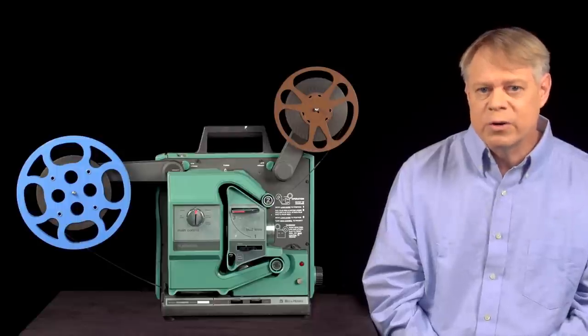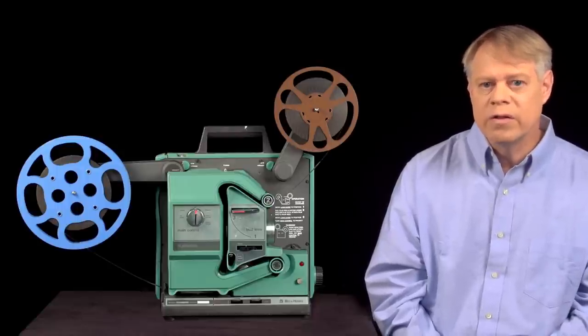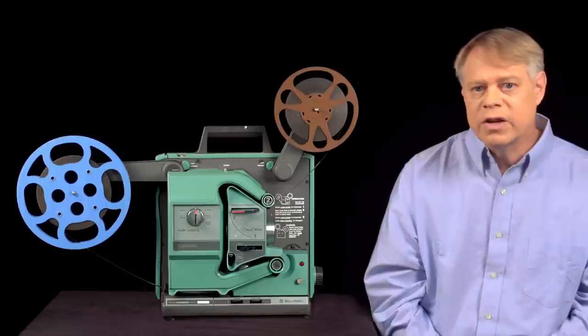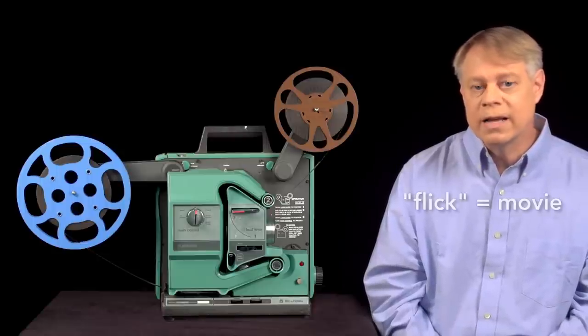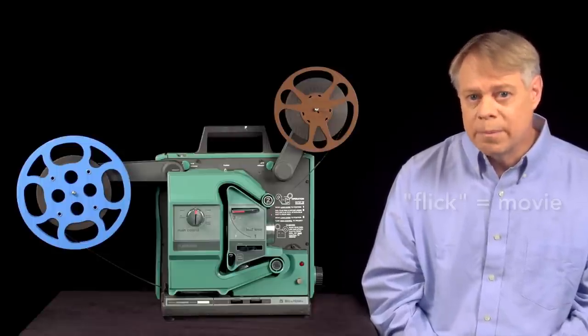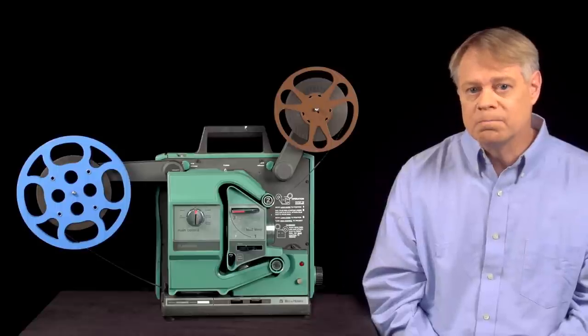Since 24 flickers per second is below the threshold, the flicker is visible. This flicker is the origin of the term flick as slang for movies. But modern film projectors don't have this problem. How did they fix it?